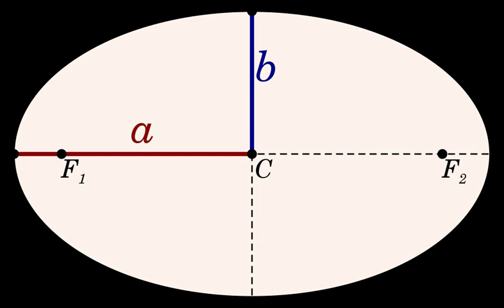In terms of the semi-latus rectum and the eccentricity: a = l / (e² − 1).